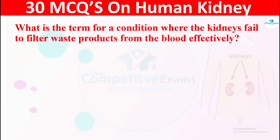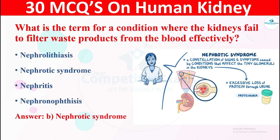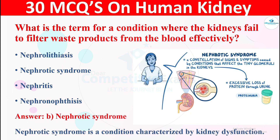Question 21: What is the term for the condition where the kidneys fail to filter waste products from the blood effectively? The options are: A) nephrolithiasis, B) nephrotic syndrome, C) nephritis, or D) nephronophthisis. The right answer is nephrotic syndrome. Nephrotic syndrome is a condition characterized by kidney dysfunction.